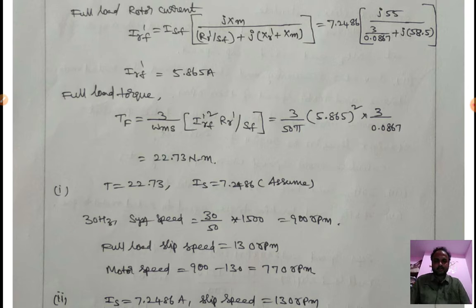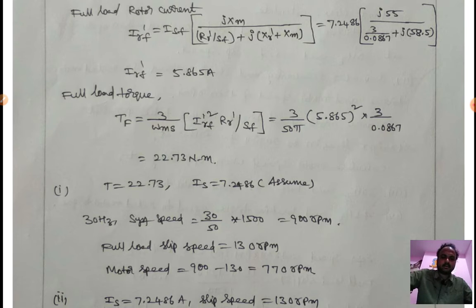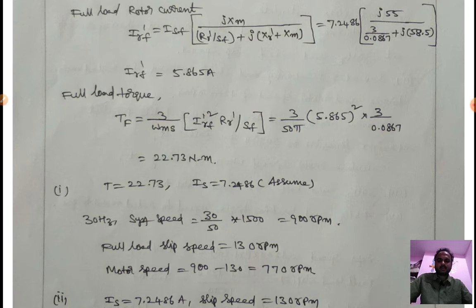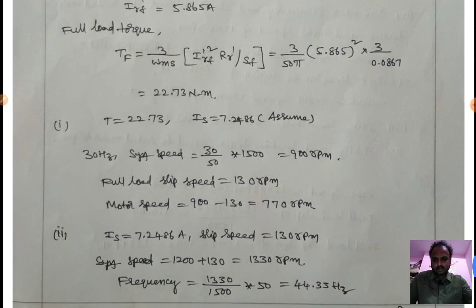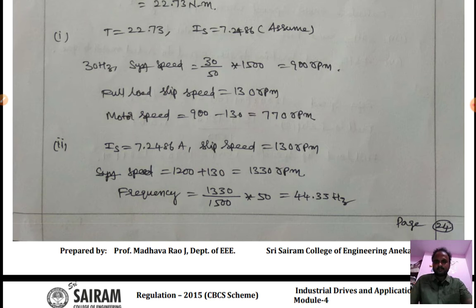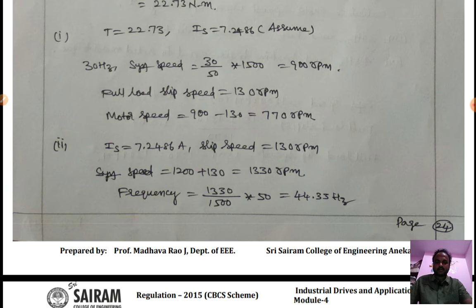Using the torque formula Tf = (3/ωms) × (Ir'f)² × (Rr'/sf), the full load torque Tf = 22.73 N·m. For part one at 30 Hz: synchronous speed = 900 rpm, full load slip speed = 130 rpm, so motor speed = 900 − 130 = 770 rpm.